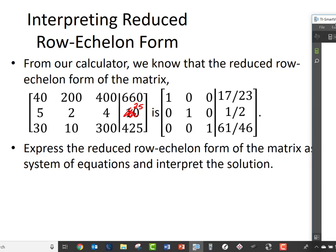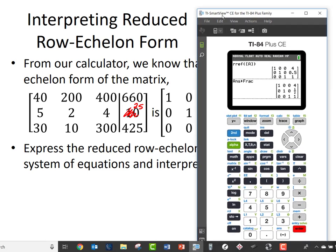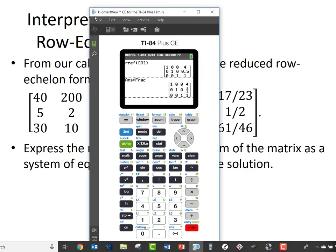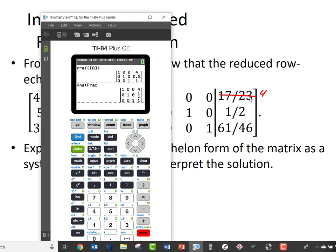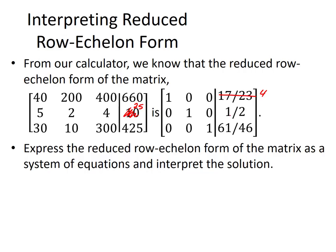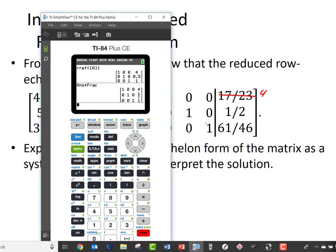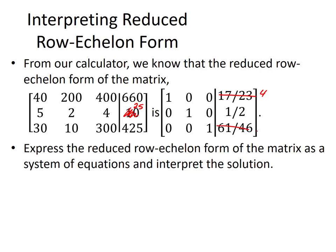So the reduced row echelon form of that matrix was, as we saw a moment ago: first row 1, 0, 0, 4; second row 0, 1, 0, 1 half; third row 0, 0, 1, 1. Although if we did have some strange fractions, that's perfectly acceptable in context.